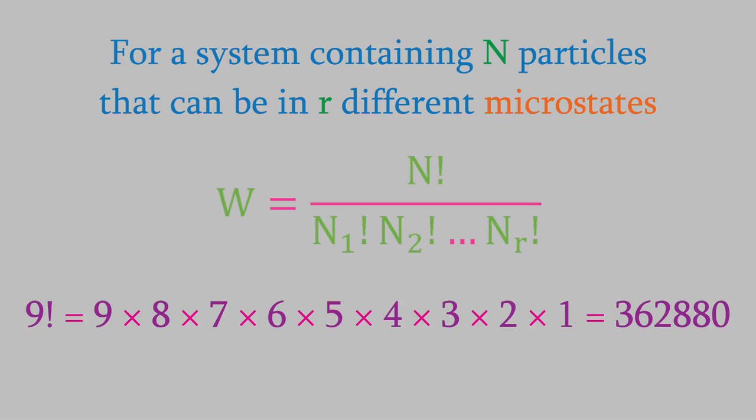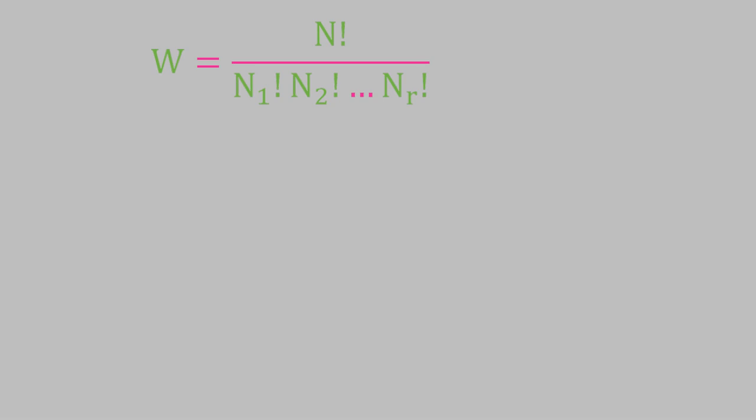So, our equation has n factorial in the numerator, and the product of the factorials of the population for each of the different microstates in the denominator. We can make this equation a little shorter by using this notation.